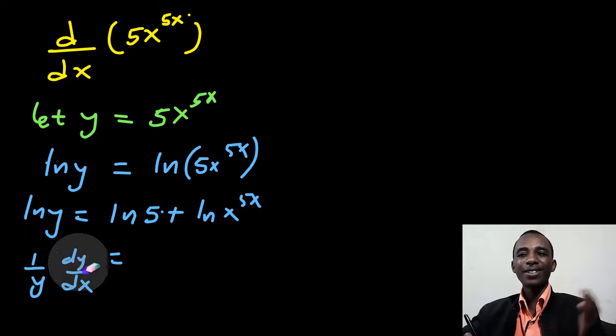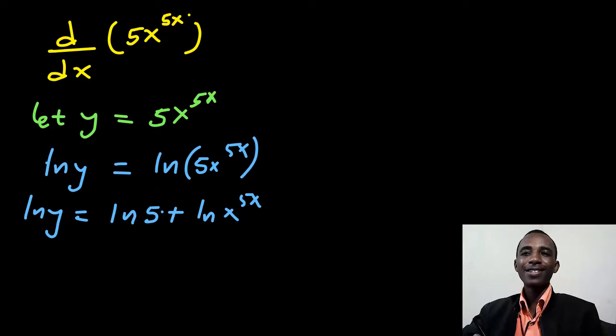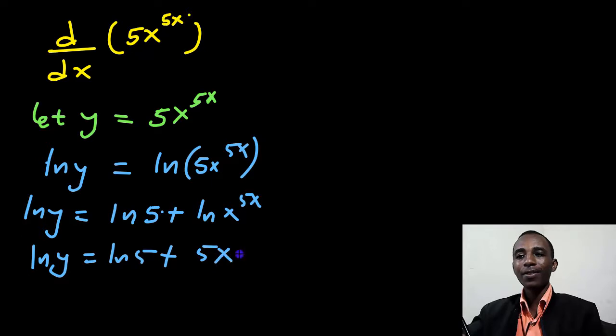Okay, in fact, I think I should just write this before. So let's say natural log of y equals natural log of 5 plus, let's now, we can drop the power of course now. So that's 5x natural log of x. Okay, that's better now.